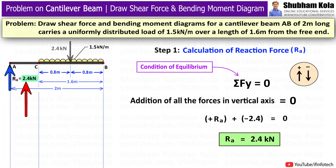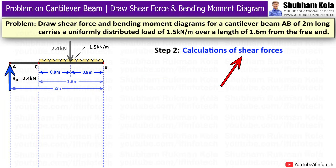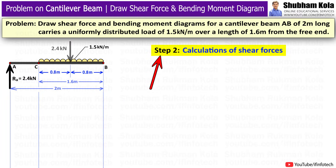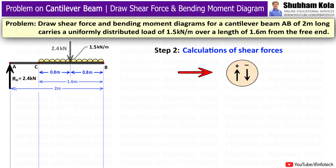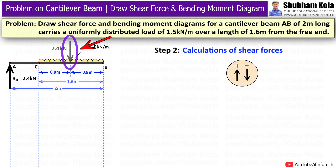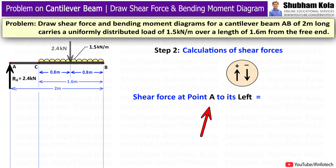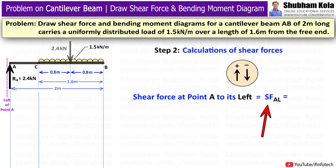With the calculated value of RA, we proceed to the next step: calculation of shear forces. The sign convention is that upward forces are positive and downward forces are negative. Starting from the left-hand side of the beam, the shear force at point A to its left — there is no force acting to the left of point A, therefore shear force at A to the left equals 0.